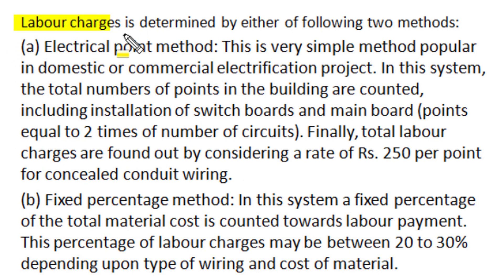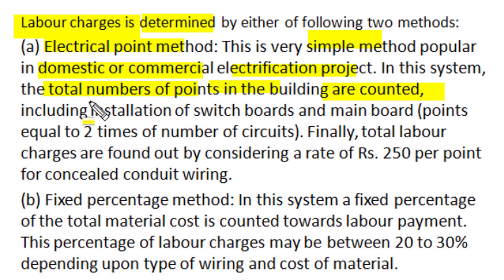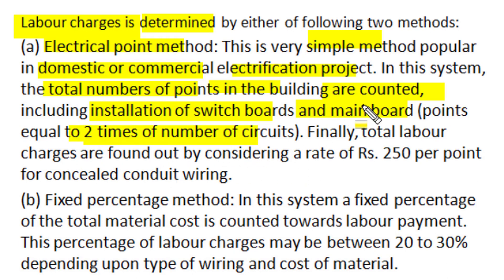The total amount of labor charges for any electrical installation is determined as follows. The total number of points in the building are first counted out. Along with the number of points, we also include installations of all switchboards and all main boards. When we count main boards, it is counted as two times the number of circuits in the distribution board.